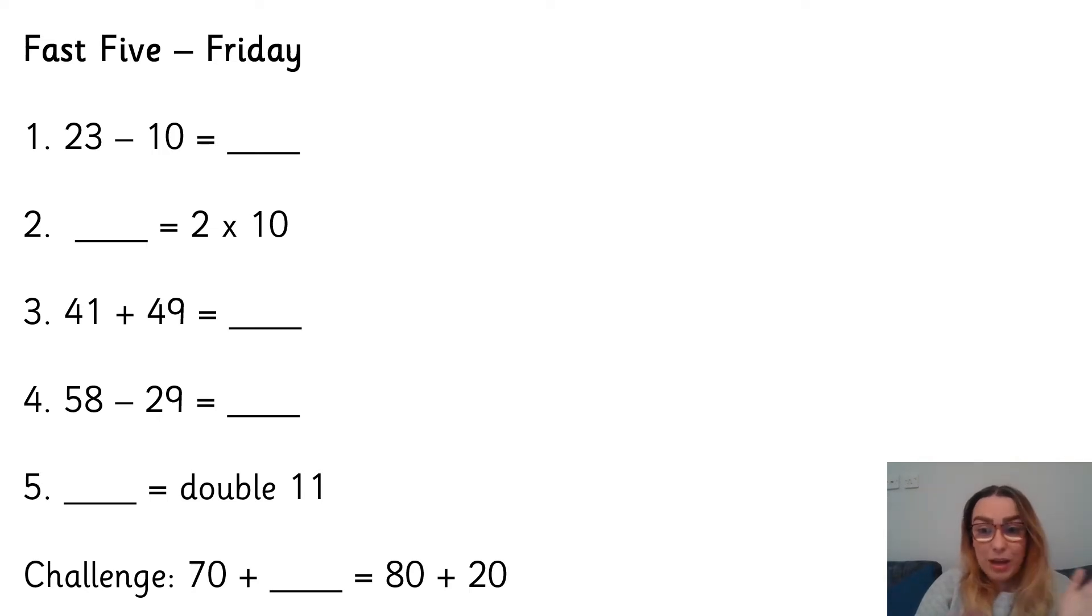Okay, if you're back then you're ready to go through the answers. So number one, 23 subtract 10. What did you get? You should have got 13 because if you take one 10 away from the two 10s in 23, you've got one 10 left and the three ones stay the same.